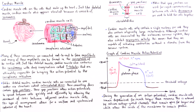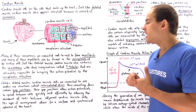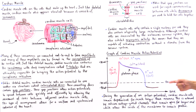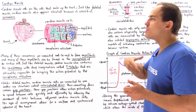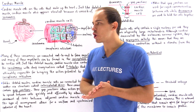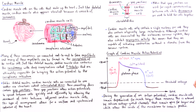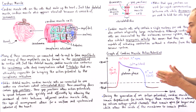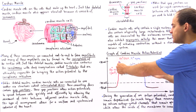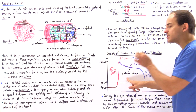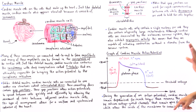The final concept to briefly discuss regarding cardiac muscle cells is the action potential and what it looks like compared to a neuron's action potential. The graph of the cardiac muscle's action potential shows a long region known as the plateau phase, which we do not find in the action potential of a neuron.